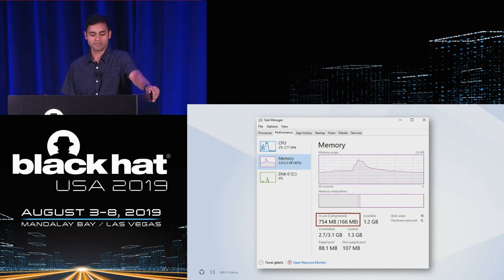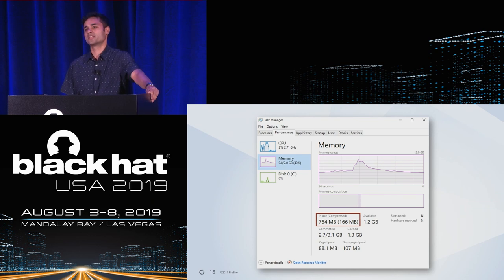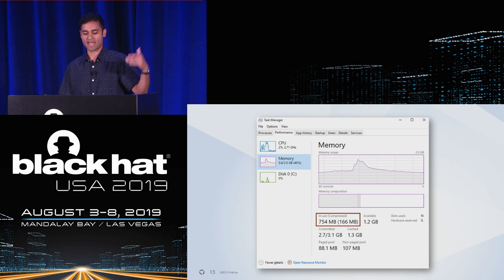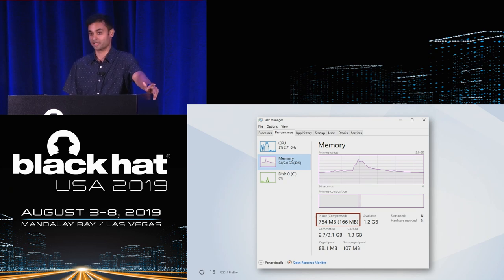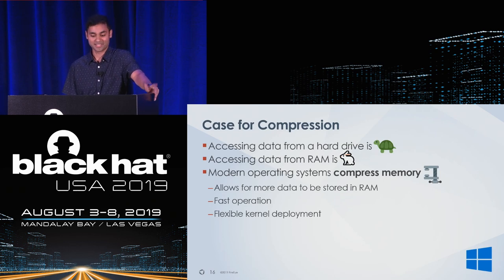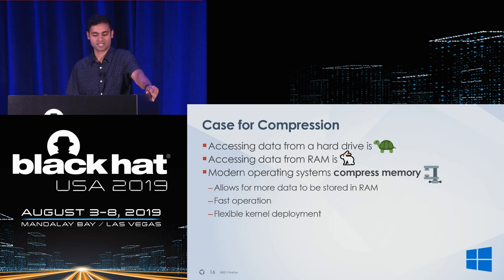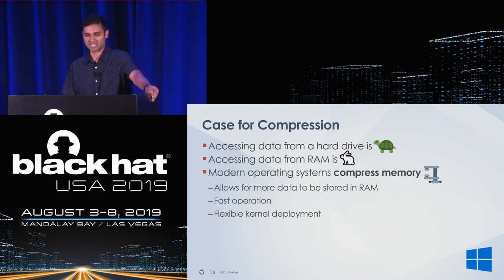A major class of performance optimizations revolves around keeping data away from slower media like the hard drive — and memory compression falls in that category. On Windows 10 machines, you can open Task Manager's performance tab and see how much memory is compressed. Eyeballing one example, about 10% of the system's memory is compressed. Accessing data from a hard drive can be an order of magnitude slower than RAM. Linux started memory compression in 2013 with the ZSwap project, Mac OS followed, and Windows rolled it in around the same time.